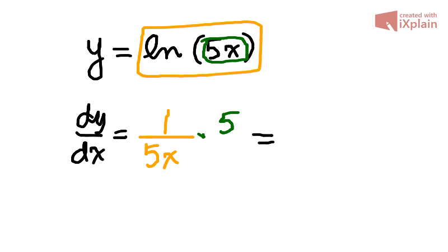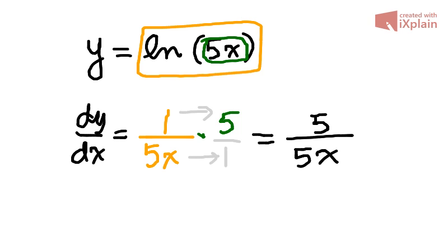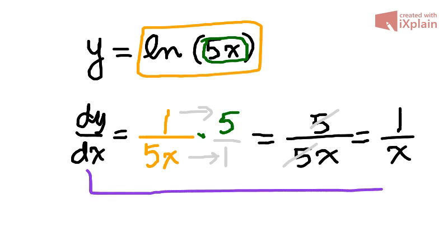When we simplify this, we get 5 over 5x, and then simplify: 5 goes into 5 once, and 5 goes into 5x, x times. That's why the derivative of ln(5x) is just 1 over x.